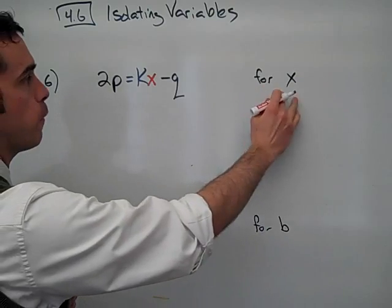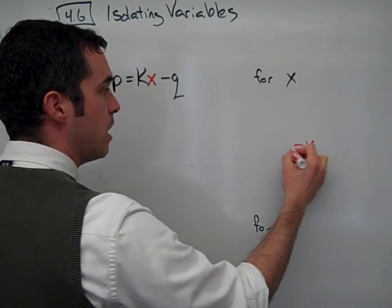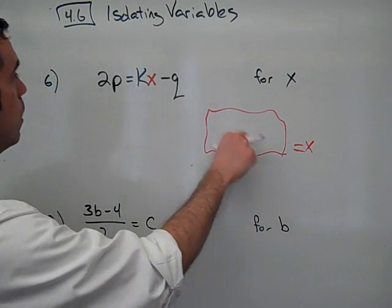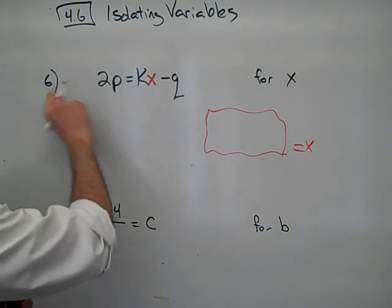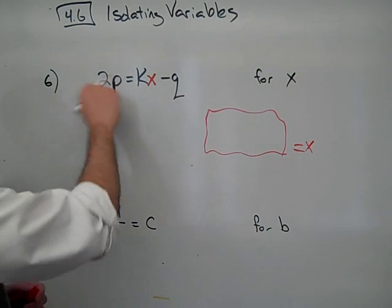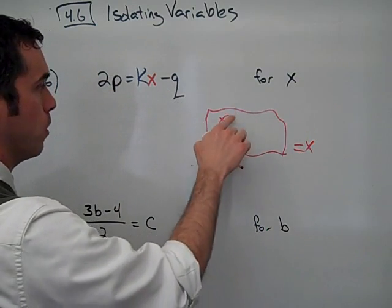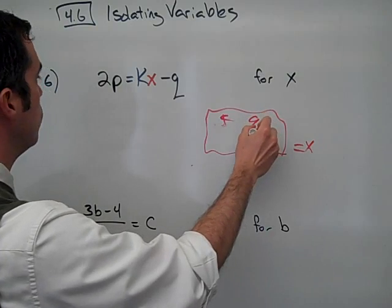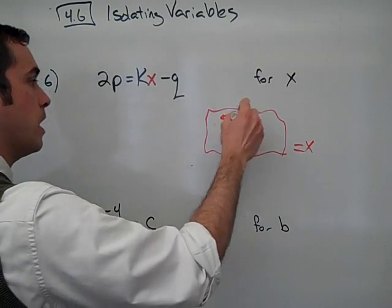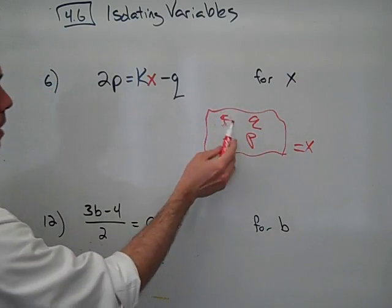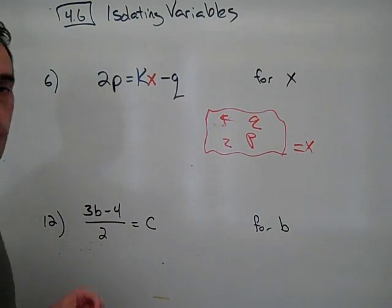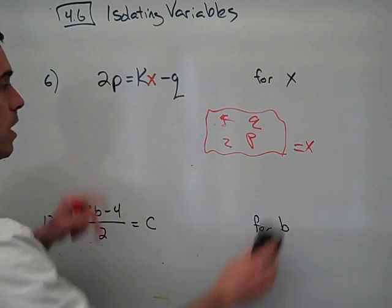So when it says solve for x, it will say x equals an expression with k, q, p, and 2 in there, because we're going to move all the other variables to the left side of the equation.